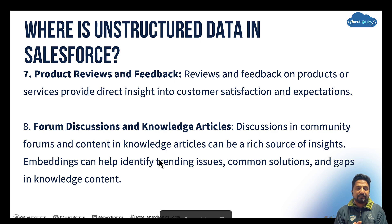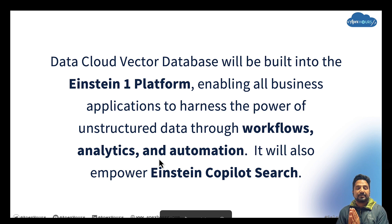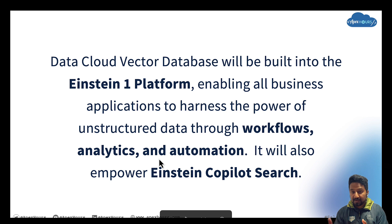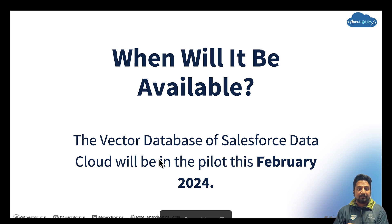The Salesforce Data Cloud vector database is built on the Einstein platform. It will bring vector database power to workflows, analytics, and automation, and will also power Einstein Copilot search. It was claimed to go live in February 2024, so keep your alerts on Salesforce announcements to learn more. That's all I had for this presentation — I hope you enjoyed it. Follow Apex Hours for more detail, and drop your comments with any questions and thoughts on this video. Thank you.